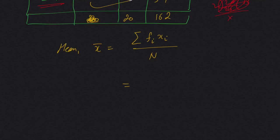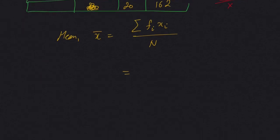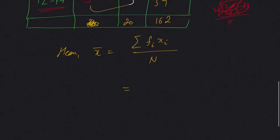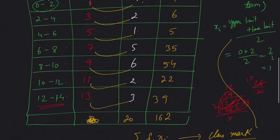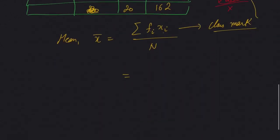This represents the class mark, so the mean using direct method will be summation of the product of frequency with its class mark. This is called the class mark, which is calculated as upper limit plus lower limit divided by 2. Summation of the product of the frequency with its class mark divided by n.